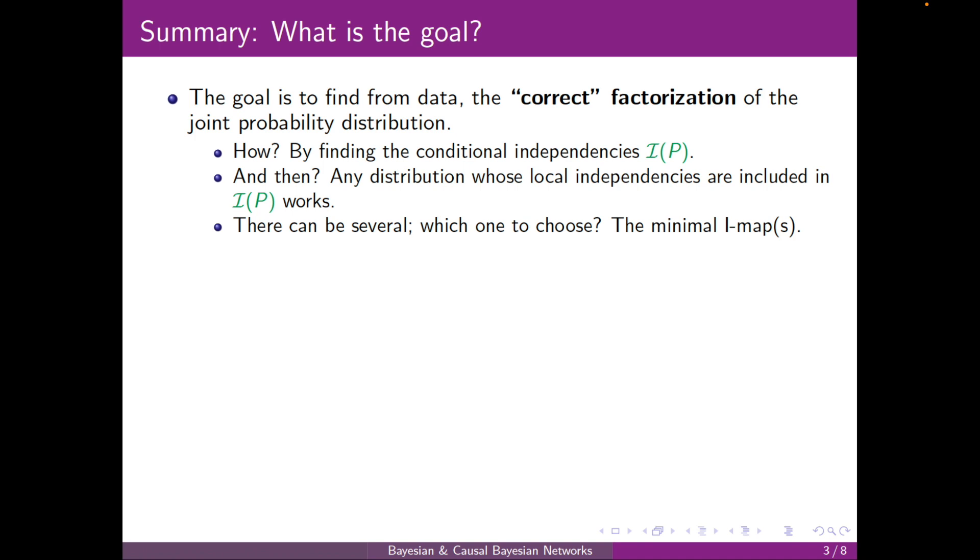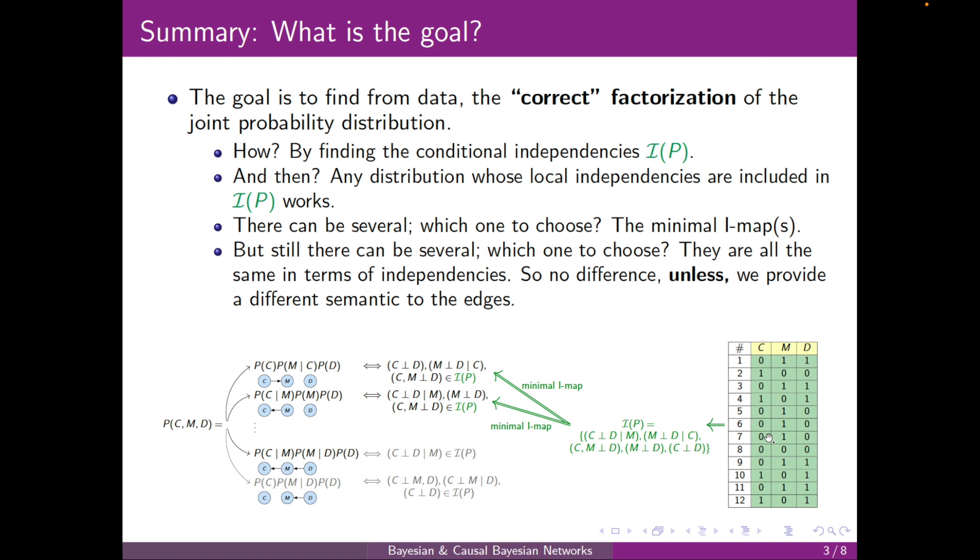So a summary of mainly what we did in the first chapter. The goal was to find from data the correct factorization of the joint probability distribution. The question was how? Well, by finding the conditional independencies I of P from the map. I'm not talking about structure learning there, we did it more optimally here, we're just saying how we can check if a factorization matches the distribution.